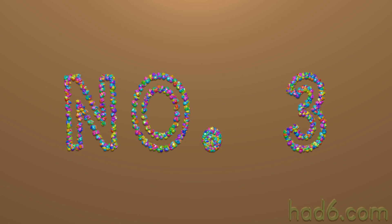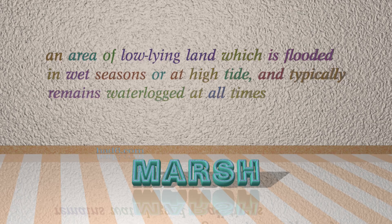Number 3: Marsh. Which means an area of low-lying land which is flooded in wet seasons or at high tide, and typically remains waterlogged at all times.